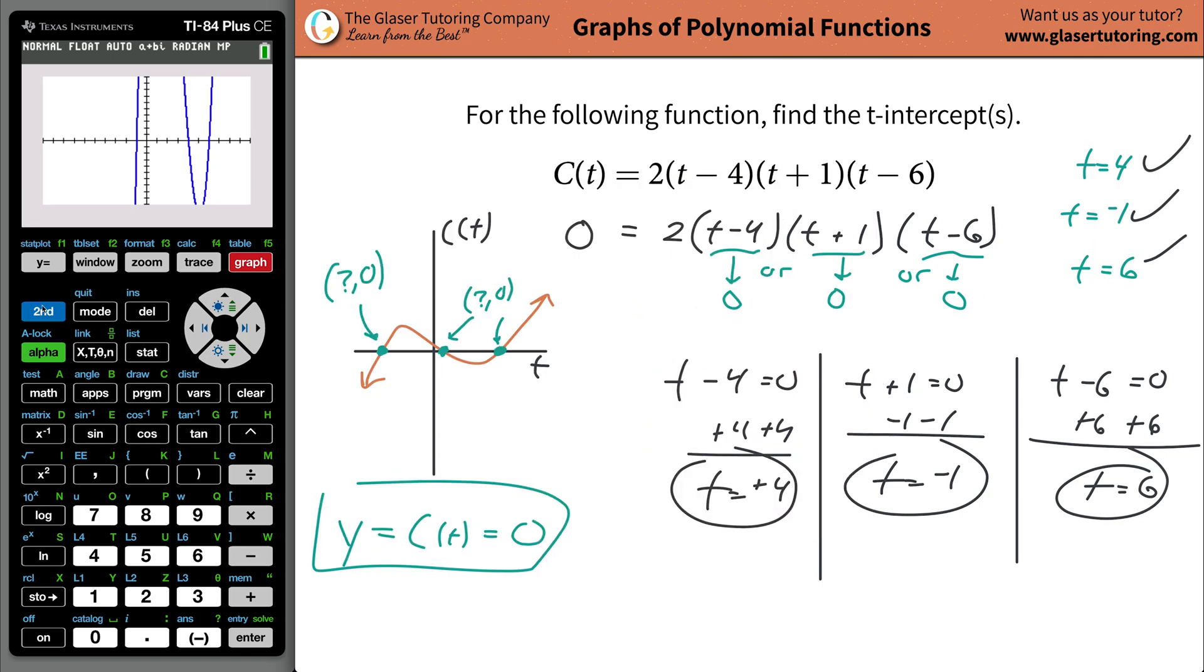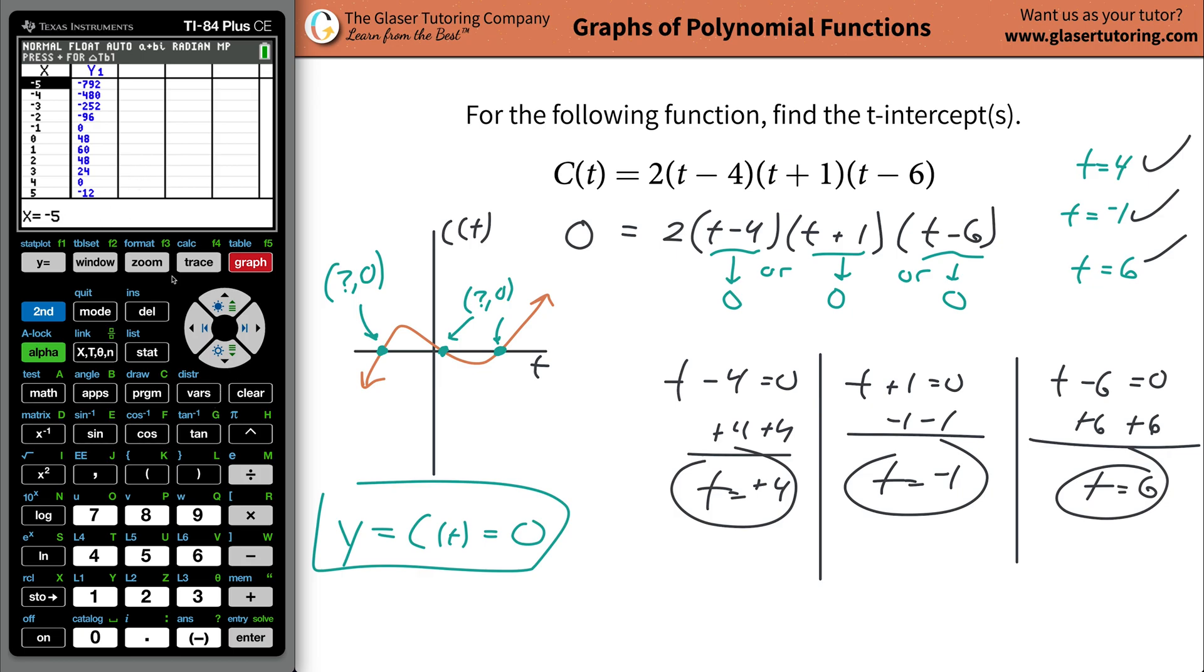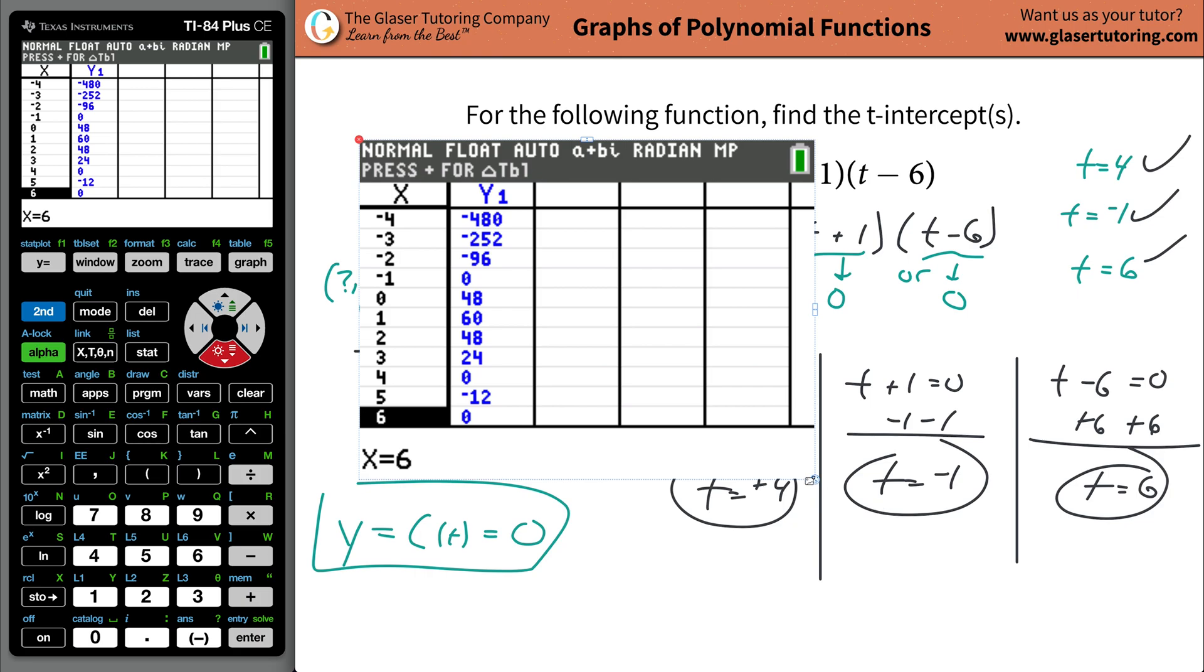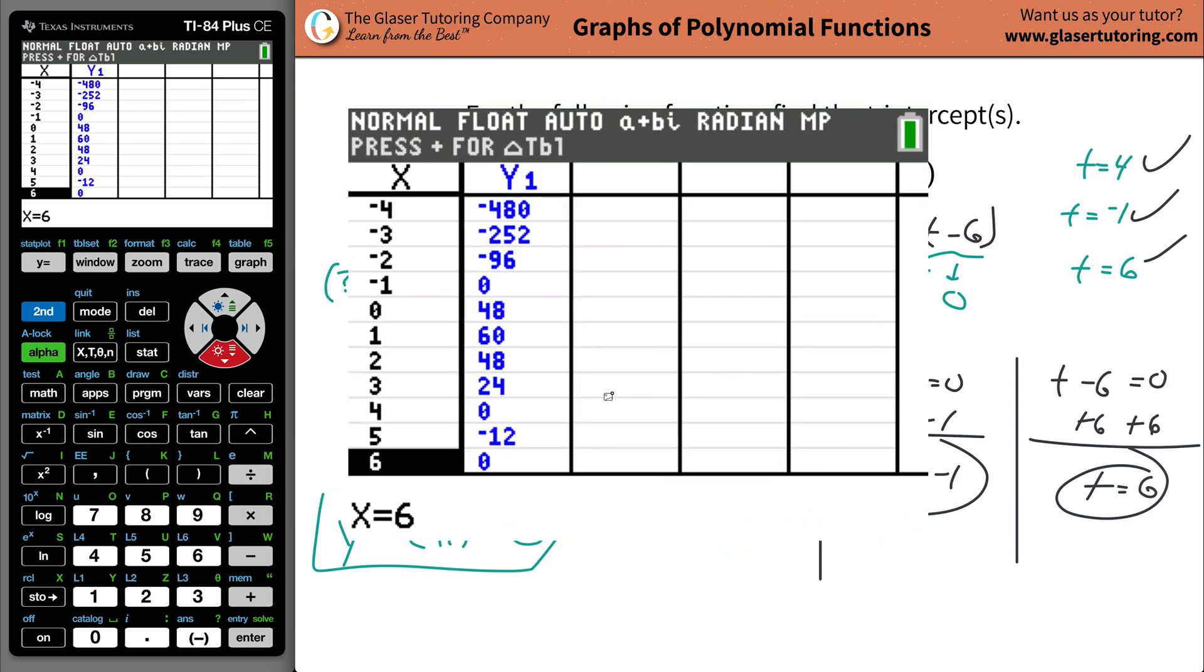Look at how easy that is. Now you can also go to the table if you want to go to table. And I want you to scroll through this and find out now the locations where the Y value is zero. So if you notice, the Y value is zero